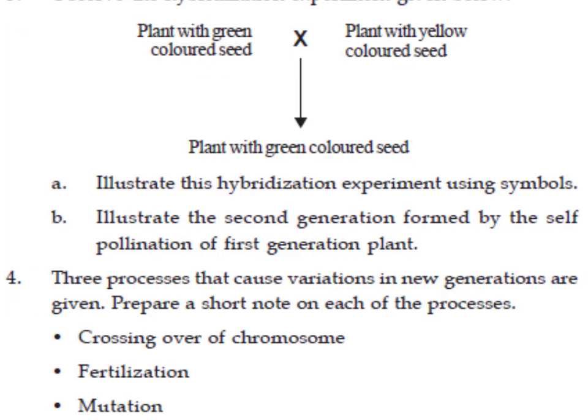The fourth question: three processes that bring about variations in new generations are given — prepare a short note on each. The three important processes are: crossing over of chromosomes, combination of alleles during fertilization, and mutation. You will need to prepare notes from the textbook, as this is very important for the exam.